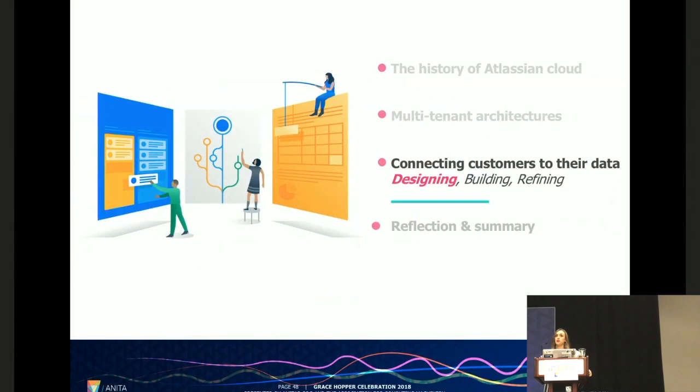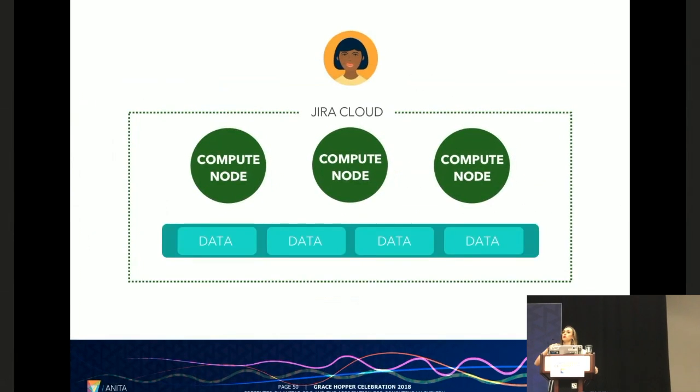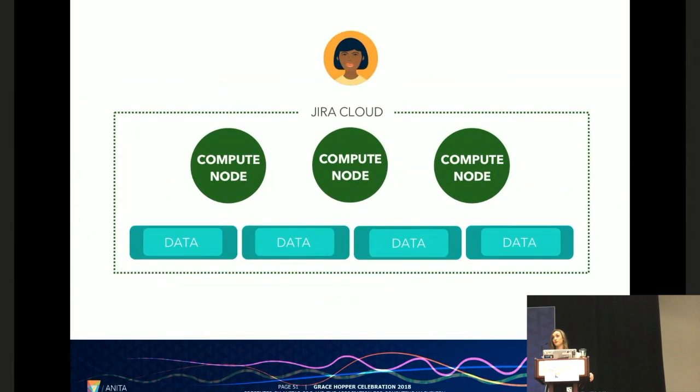So in the beginning we wanted to build a multi-tenant database and the idea here is that you put all of your customers data within one database and then the compute node would figure out what information to fetch based on the context of the request. But we were already amongst a really really large and risky project and so we started to sit down and investigate some ways that we could cut scope and reduce risk but also deliver as much value to our customers as possible. And at that point in time we decided that a multi-tenant database just wasn't the best thing to do. And so we decided to compromise and we stuck with our single tenant per single database model. But this gave us a new problem to solve because we now had tens of thousands of databases but only a handful of compute nodes and we need to tell each compute node which database to connect to dynamically.